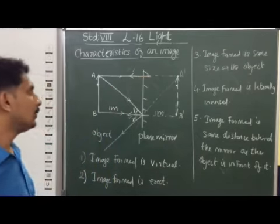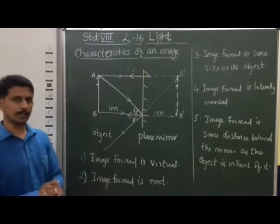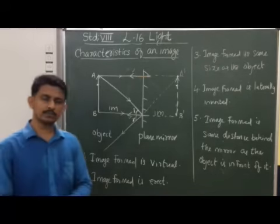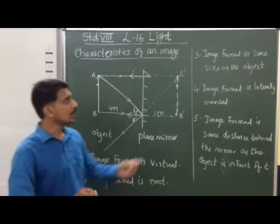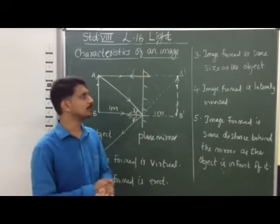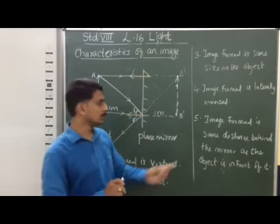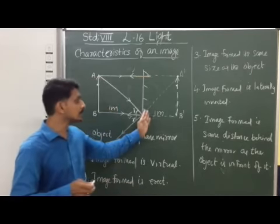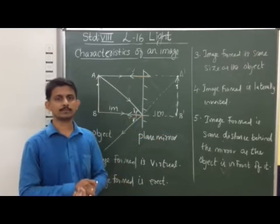These are the important properties of image formation by a plane mirror. The first property is the image formed is virtual. The second is the image formed is erect. The third is the image formed is the same size as the object. The fourth is the image formed is laterally inverted. And the fifth is the image is formed the same distance behind the mirror as the object is in front of it.